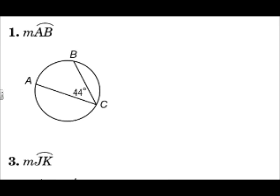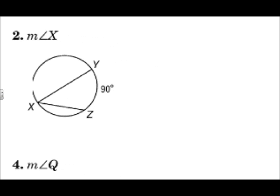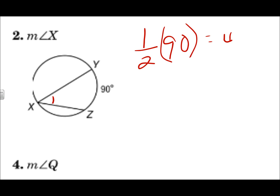Find each measure. The measure of arc AB — that's the intercepted arc this inscribed angle opens up to. The inscribed angle is half of the arc, so the arc is double the angle: that will be 88 degrees. The measure of angle x is an inscribed angle, so it's half of the intercepted arc. Half of 90 is 45 degrees.